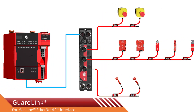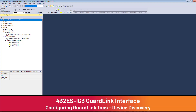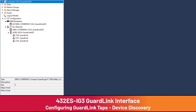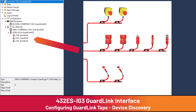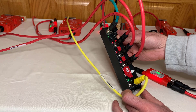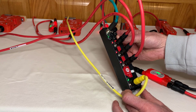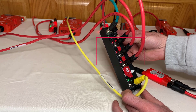The GuardLink on-machine interface can bring safety inputs and diagnostic information into a GuardLogix 5380 or 5580 safety programmable controller. The subject of today's video is how to use online device discovery to configure GuardLink taps to communicate with the 432ES-IG3 GuardLink interface. Additionally, we'll look at how to use device discovery to troubleshoot IO configuration errors.